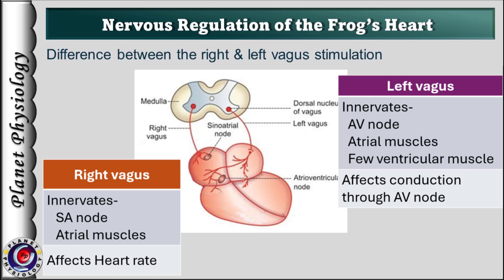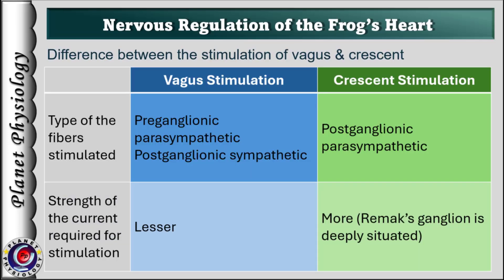In frog's heart, there is no difference due to right or left vagus stimulation — both cause stoppage of heart in diastole followed by gradual recovery. Regarding the difference between vagal and crescent stimulation: when we stimulate the vagus in the frog, we stimulate preganglionic parasympathetic fibers as well as postganglionic sympathetic fibers, while during crescent stimulation we stimulate only the postganglionic parasympathetic fibers. Another difference is that crescent stimulation requires higher strength of stimulus than vagal stimulation, because the Remax ganglion is situated deep within the crescent.